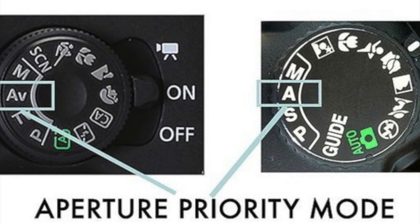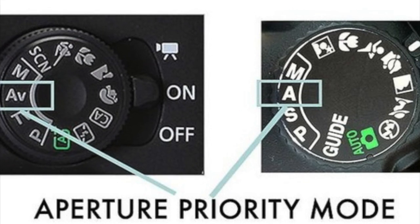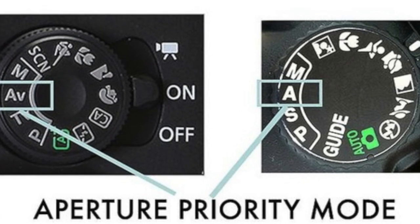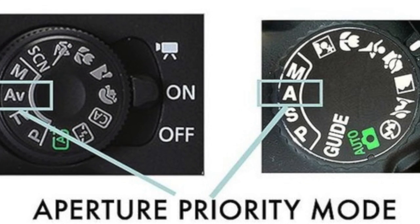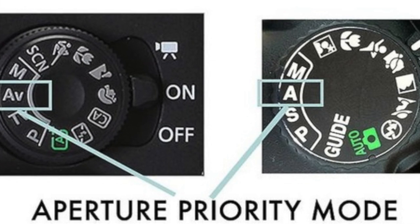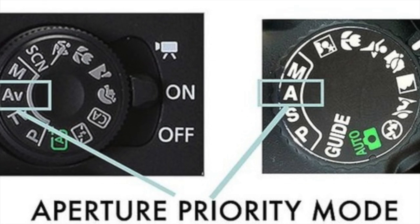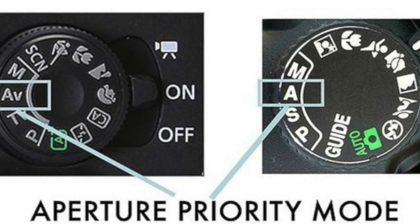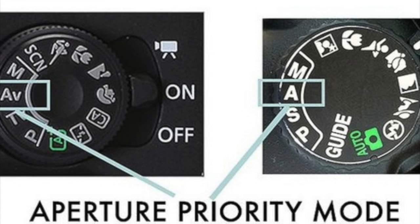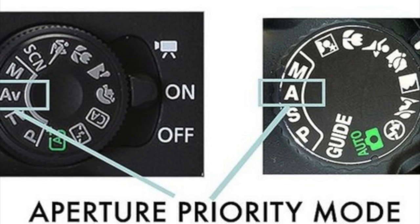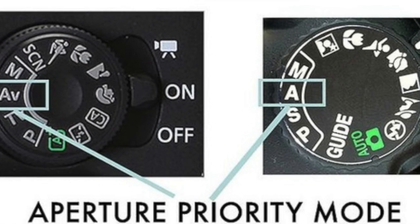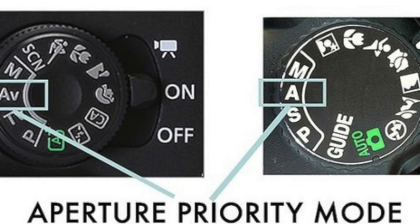The first mode to know is aperture priority mode, which is AV or A. You can think of this as a sort of semi-automatic shooting mode. When you choose this one, you select the aperture — or the size of the opening behind the lens that allows light into the camera — and the camera will control the shutter speed, or how long the light is allowed into the camera.